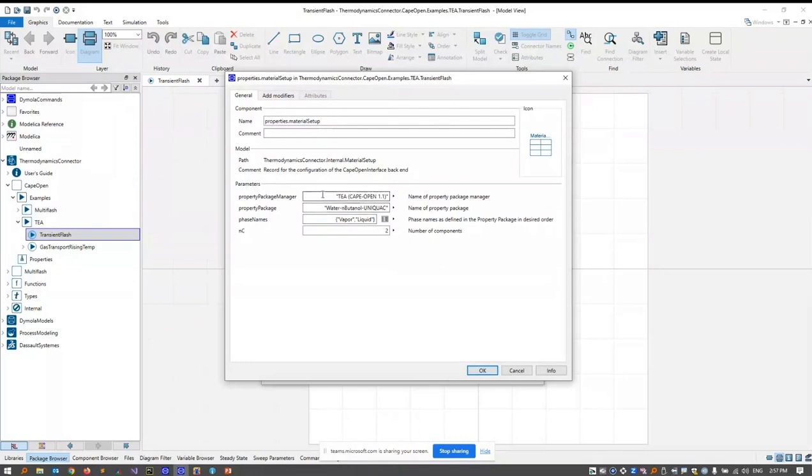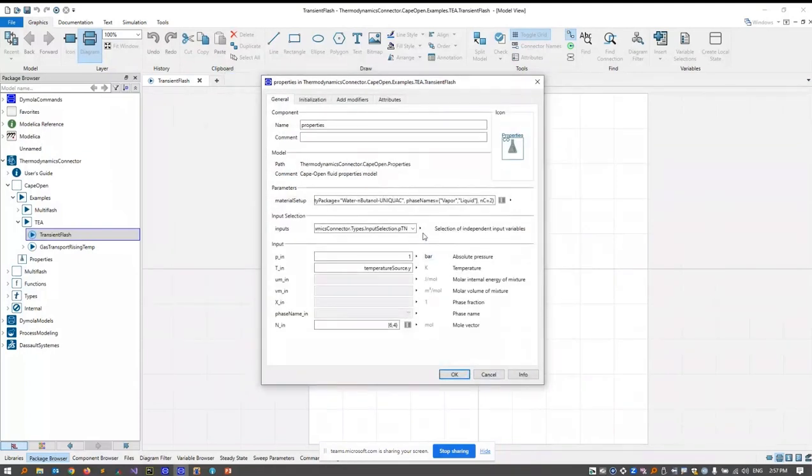So just with a string, I select the TEA property package manager, the water and butanol property package that comes with TEA. I select the phases that are to be calculated and say how many components are in the mixture. And with the dropdown, I can choose the flash calculation.